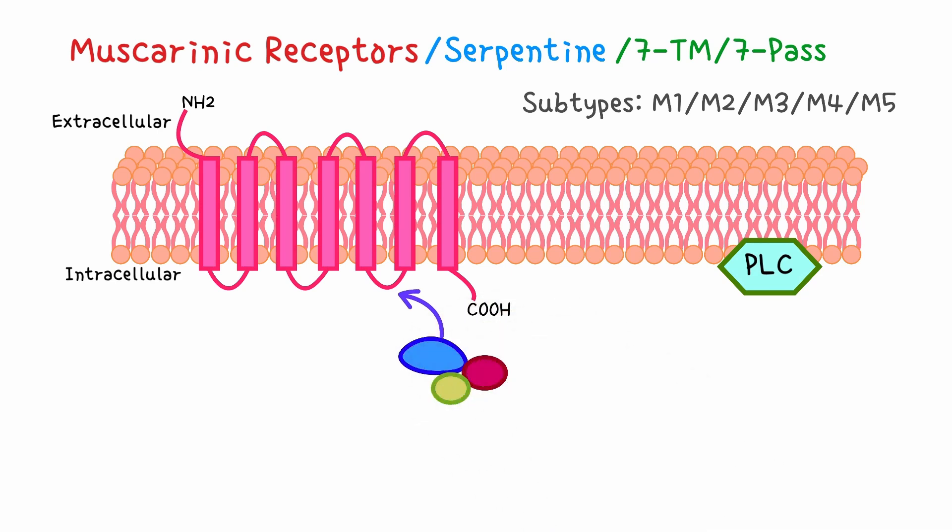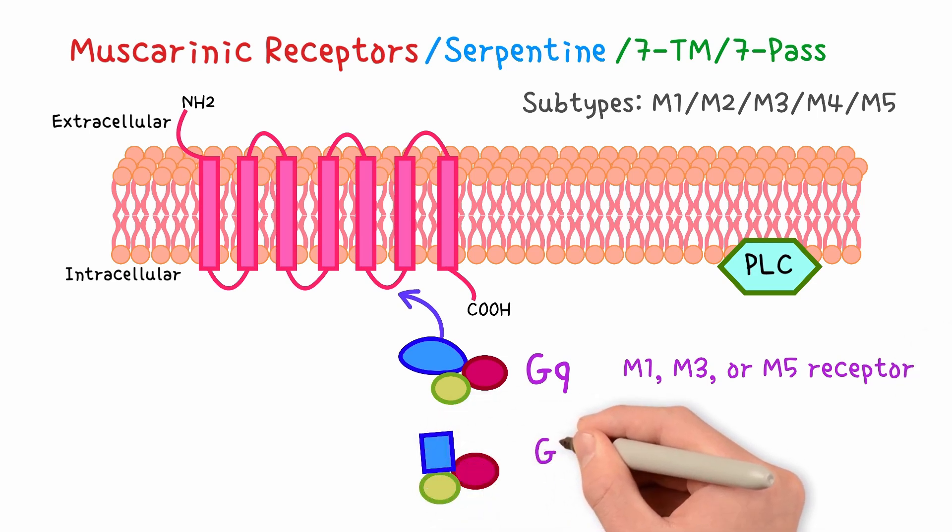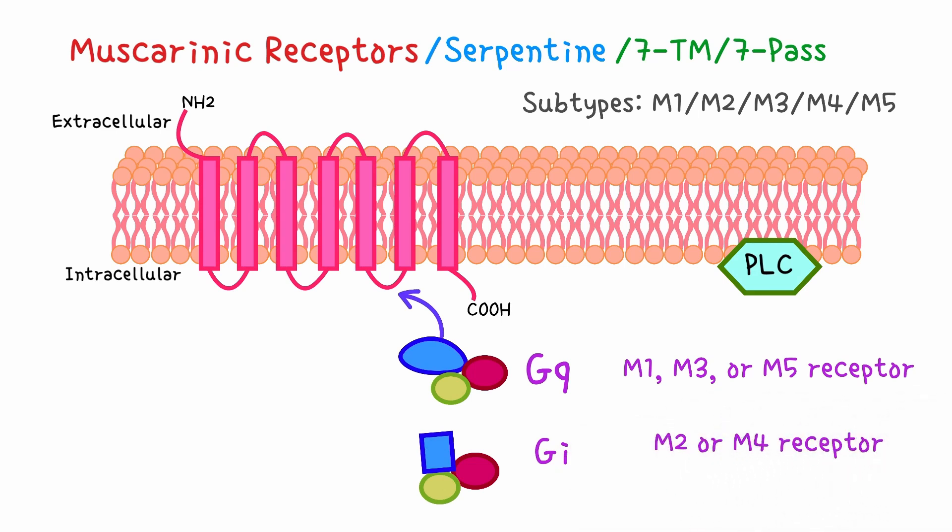If it has a specificity to GQ protein, for example, then it binds to GQ only, and that makes it an M1, M3, or M5 receptor. If the I3 loop specifically binds the GI protein, we call this receptor the M2 or M4 receptor. We can divide them into two groups, the odds and the evens.